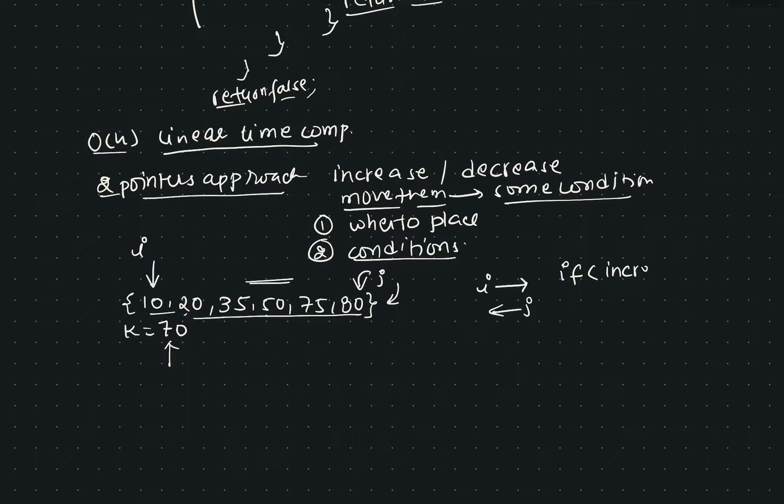In just one pass or one iteration it was possible to find the pair, so the complexity reduces to O(n), which is a significant improvement over the naive solution. To recap: if we want to find a pair in a sorted array, we can use the two pointers approach to solve the problem in linear time. Thank you.